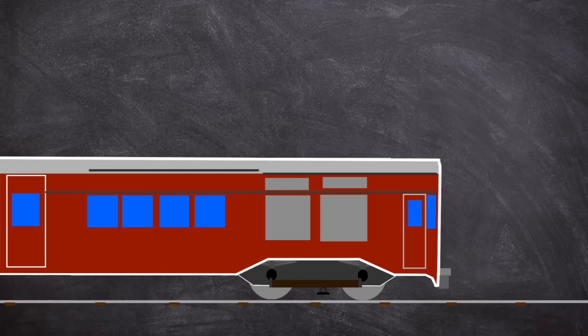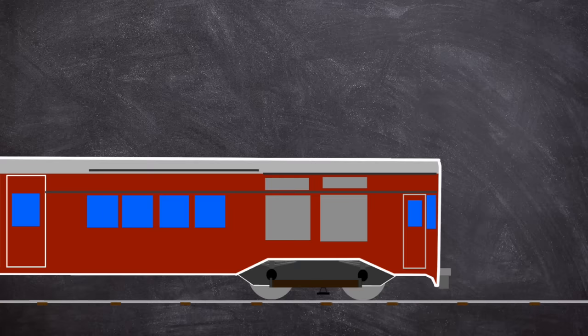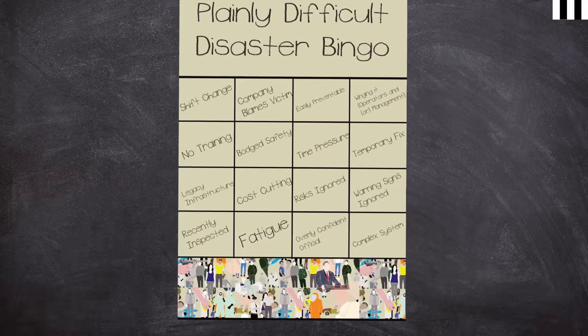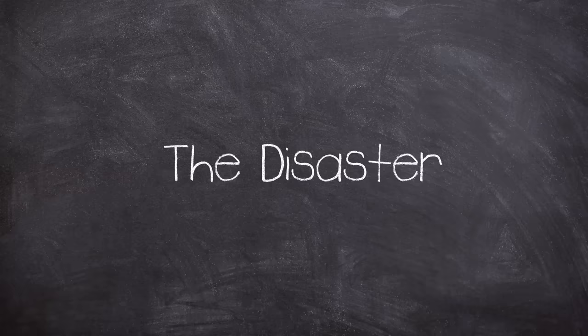Regardless, they were the stock on the central line, and they had Westinghouse electro-pneumatic brakes, a dead man, and that all-important tripcock protection. Now it's time for the disaster, so get your bingo cards ready.